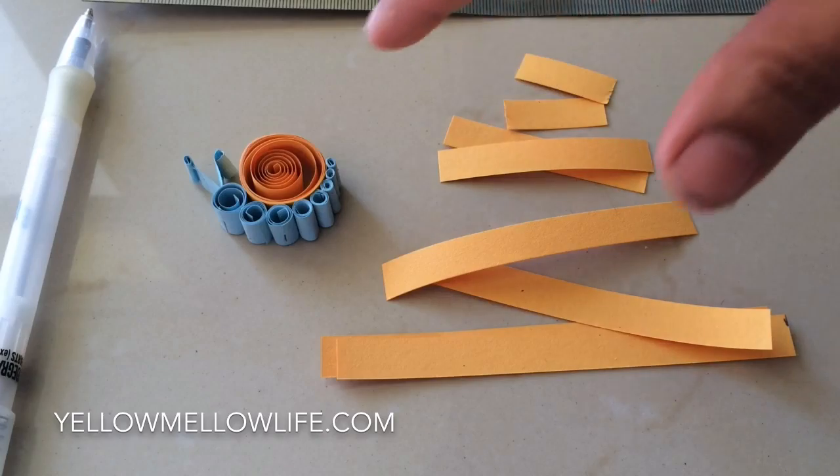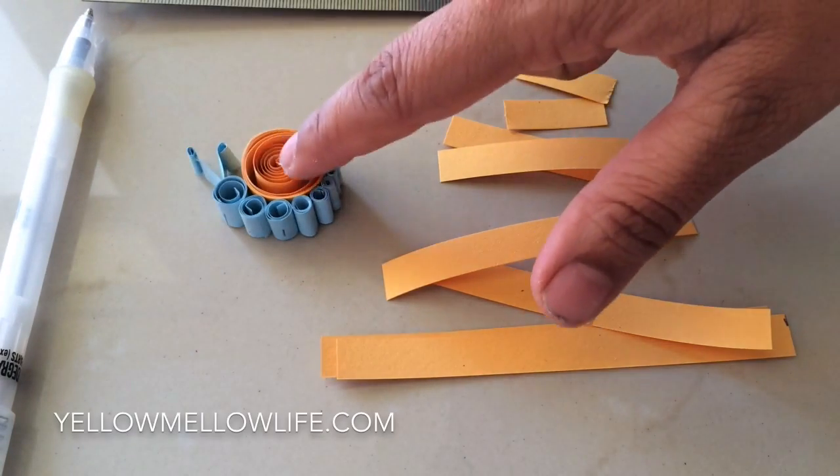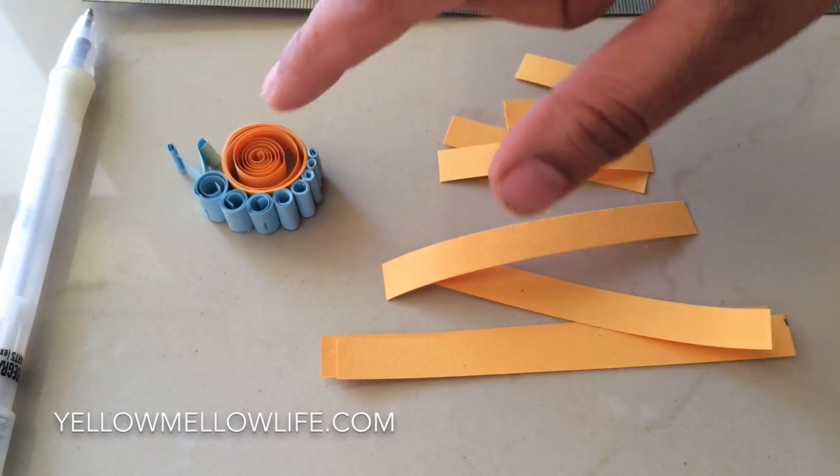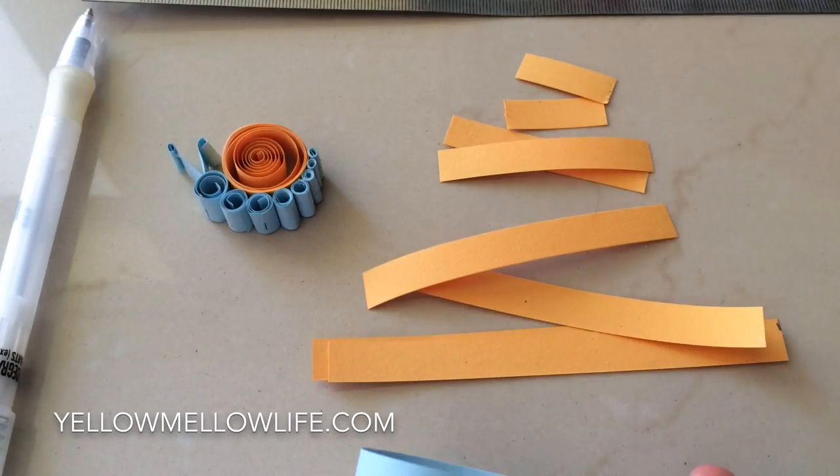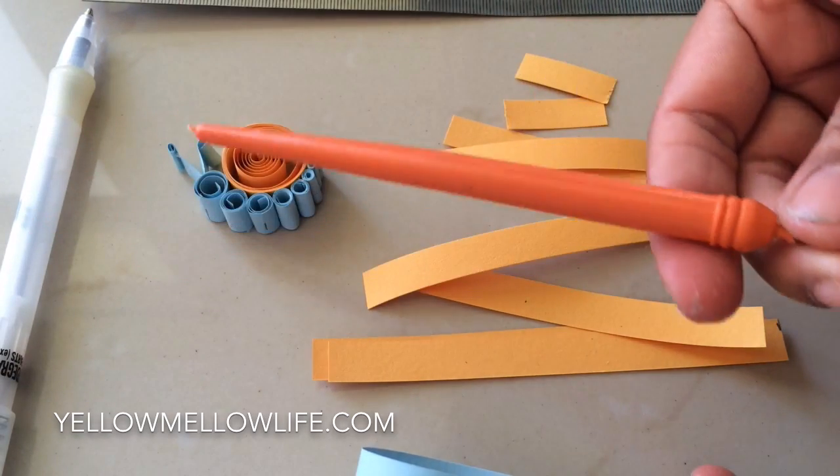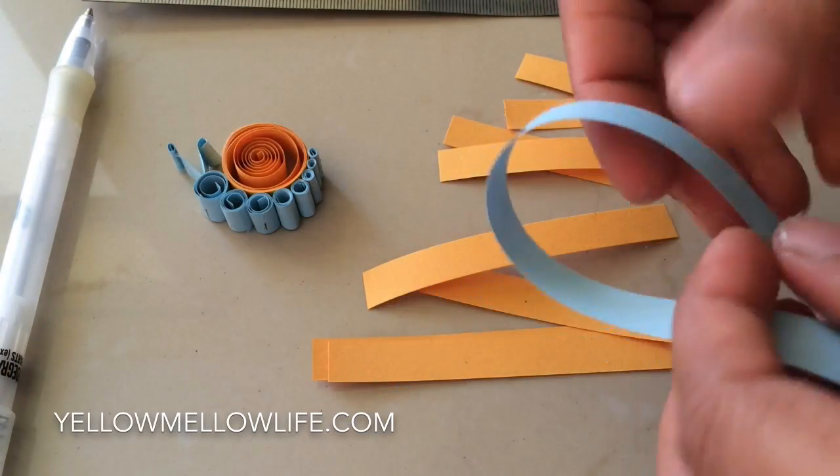So let's start off with snail. This is a snail that we are going to make. What are we going to need for the snail is quilling strips, glue, and a quilling needle. That's it.